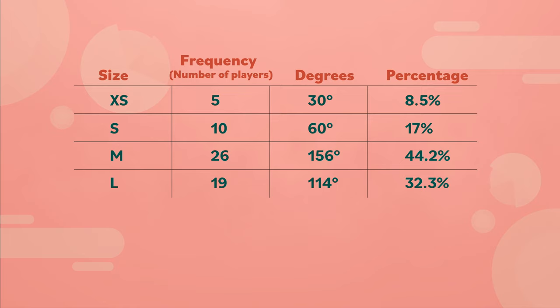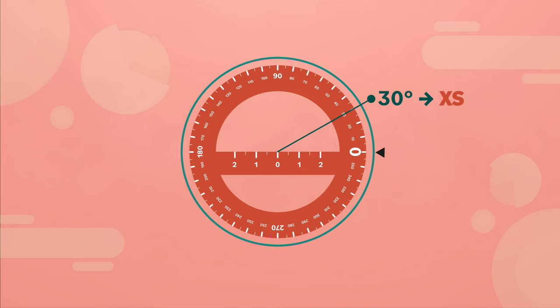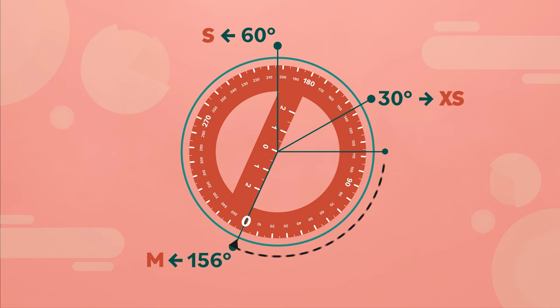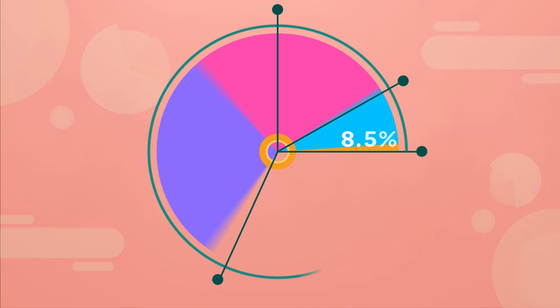Now that the table is complete, the coach begins making her graph. She traces her protractor to draw a circle, then uses it to make the first thirty-degree section for size extra small. Next up is sixty degrees for size small, a hundred and fifty-six degrees for size medium, and a hundred and fourteen degrees for size large.